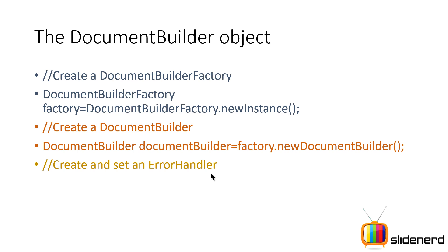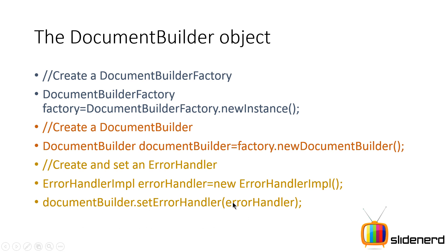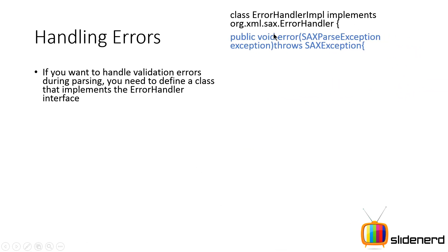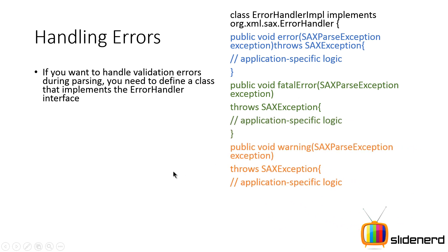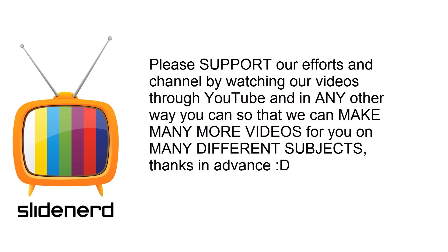If there are errors in your XML document — tags not properly formed, or the document not in accordance with a DTD or schema — you need an error handler object created like: ErrorHandlerImplementation ehi = new ErrorHandlerImplementation(). This is a class that implements the ErrorHandler interface. It has methods: error() for handling errors, fatalError() for fatal errors, and warning() for warnings. You write code inside these methods to determine what to do in each case. Set it with documentBuilder.setErrorHandler(ehi).